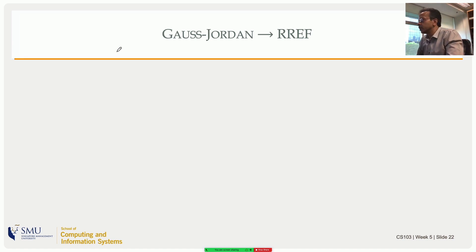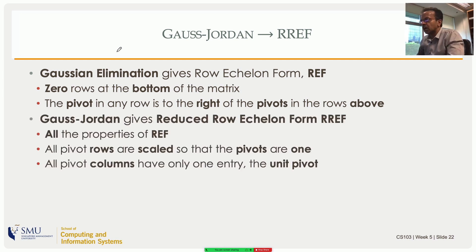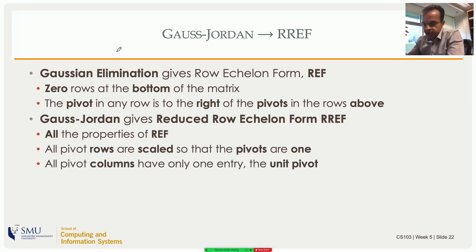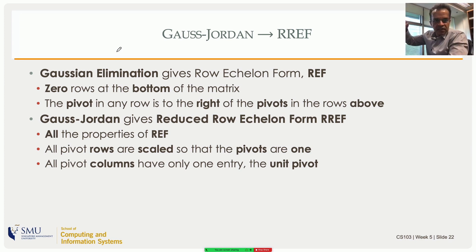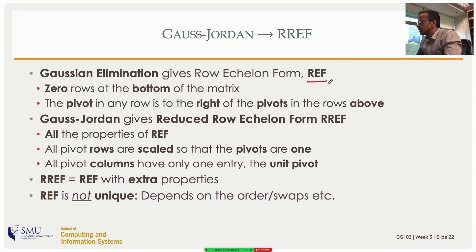Gauss-Jordan elimination gives the reduced row echelon form (RREF), which is REF with additional properties. REF requires zero rows at the bottom and each pivot to the right of pivots in rows above. Gauss-Jordan adds: scale each pivot row so the pivot equals one, then eliminate elements above each pivot by subtracting appropriate row multiples. So Gaussian elimination goes down, then Gauss-Jordan goes back up — which is essentially back substitution.